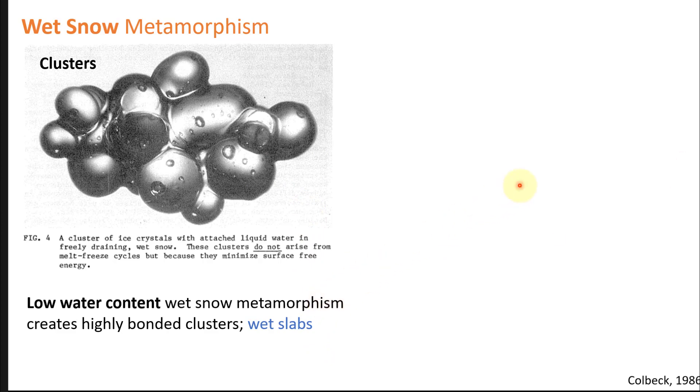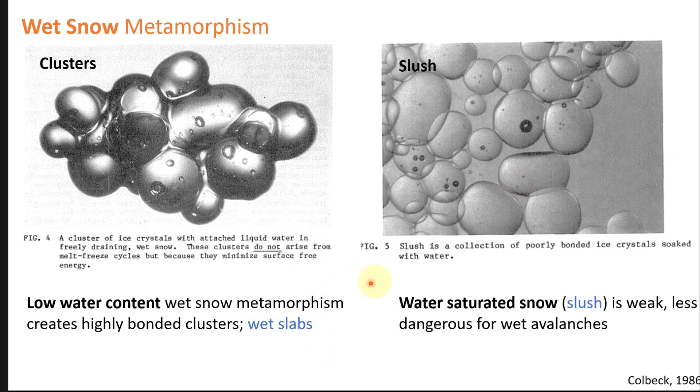The contrast to that is when you have a lot of water, water-saturated snow, aka slush. In that case there's so much snow, the bonding is poor between individual grains and there's really no rigidity to that layer. It's not a slab and it's often not a potential risk for forming a slab avalanche in the spring.